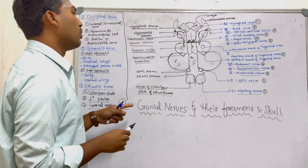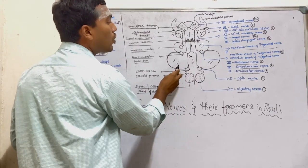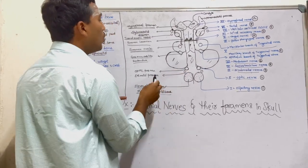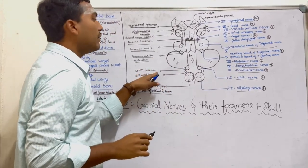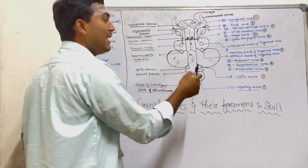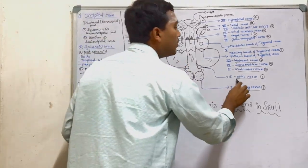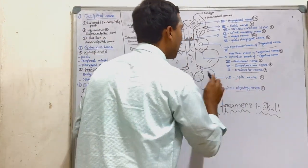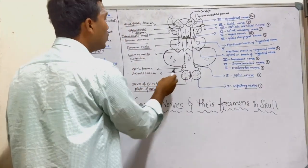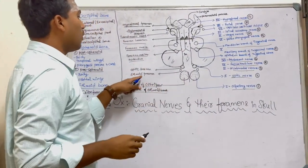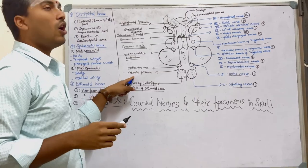Between the body and the orbital wing we get another foramen called the optic foramen, through which the second cranial nerve — the optic nerve, responsible for vision — arises. Adjacent to the optic foramen we get the ethmoidal foramen, through which the ethmoidal artery arises.